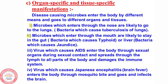Next we are moving on to organ specific and tissue specific manifestations. Manifestations means the ways in which a disease appears. A microbe enters our body by different means and goes to different organs and tissues. Which organ or tissue the microbe infects depends on the way through which the microbe entered. For example, if the microbe enters through the nose, it is likely to affect the lungs, as in the case of tuberculosis of the lungs.